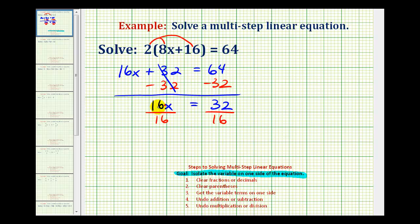Notice on the left side, we have 16 divided by 16. That would simplify to one, and one times x is just x. So we have x equals, and 32 divided by 16 is equal to two. So x equals two is our solution.